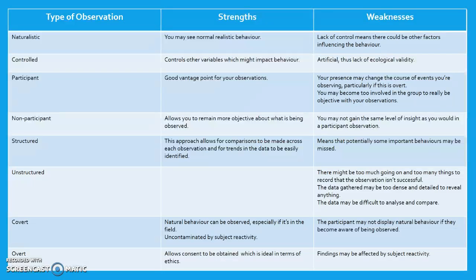Structured observation allows for comparisons to be made across each observation and for trends in the data to be easily identified. However, this means that potentially some important behaviours may be missed. Unstructured observation: there might be too much going on and too many things to record that the observation isn't successful. The data gathered may be too dense and too detailed to reveal anything, and the data may be difficult to analyse and compare.